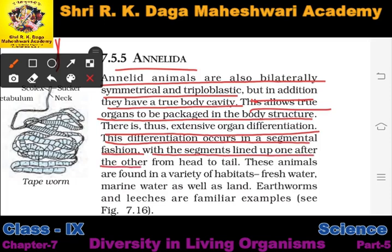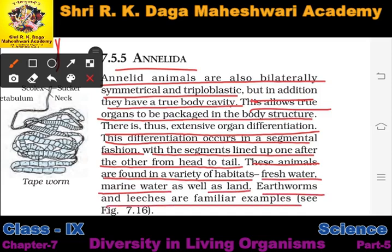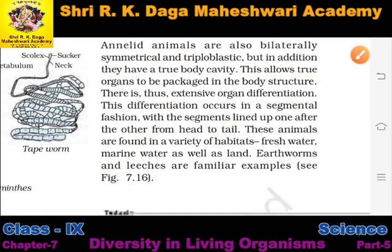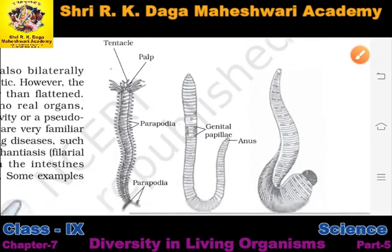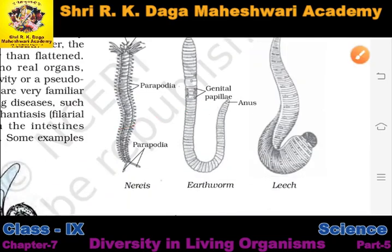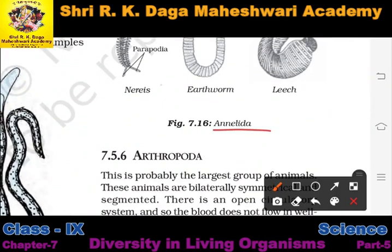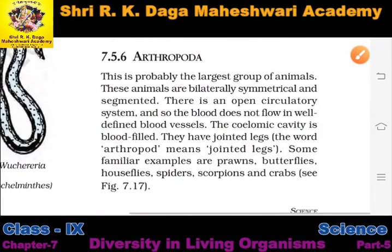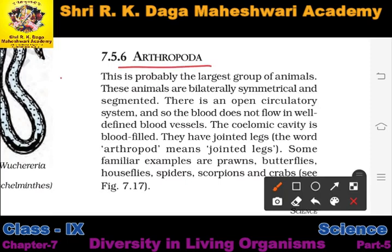With segments lined up one after the other from head to tail, these animals are found in a variety of habitats — fresh water, marine water, and also on land. Earthworms and leeches are familiar examples. Here in this picture you can see all these examples of Annelida.